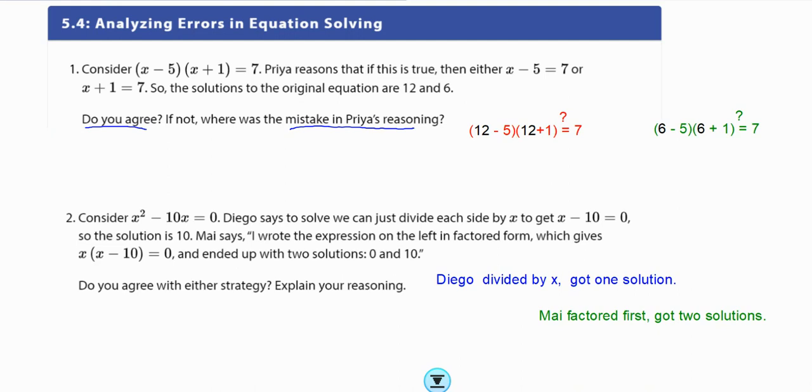So, this is asking us to consider (x - 5)(x + 1) = 7. Priya reasons that if this is true, then each factor, if she sets each factor equal to 7, the solutions to the original equation are 12 and 6. So, she got 12 by adding 5 to both sides. And then here, she subtracted 1. So, that's how she got her 12 and her 6, because she subtracted 1. 12 and 6.